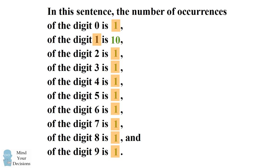But we now have a problem with this sentence. The number ten involves the digit one. So we now have a total of 11 occurrences of the digit one. So let's replace this value of ten with the value of eleven.